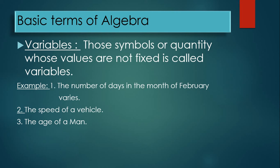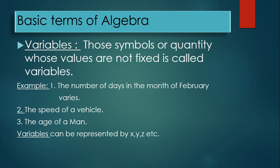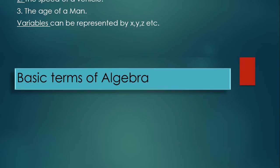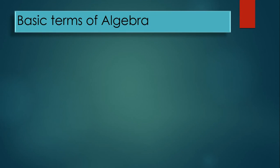Variables can be represented by x, y, z, etc. We represent variables using small letters x, y, z. We can also use other alphabet letters as symbols to represent variables.